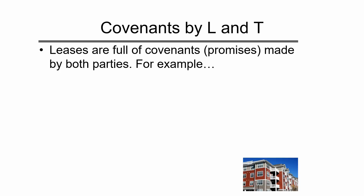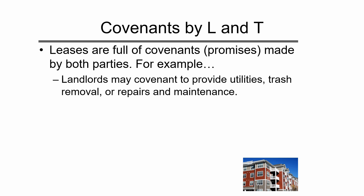Leases are full of covenants. A covenant, of course, is simply a promise made by one of the parties — either the landlord or the tenant — to the other one. On the landlord's side, landlords might covenant to provide utilities, to provide trash removal, to make repairs and maintenance. There are many other covenants that landlords sometimes make.